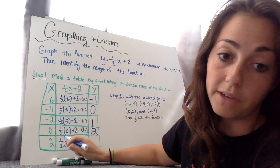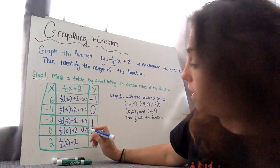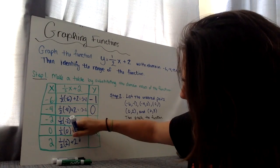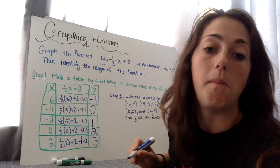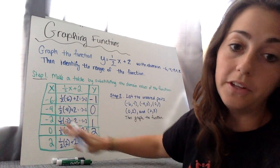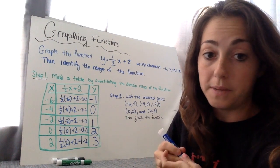Lastly, the last domain value to plug in, half of 2 is 1 plus 2 is 3. So I filled out my table with the information given.